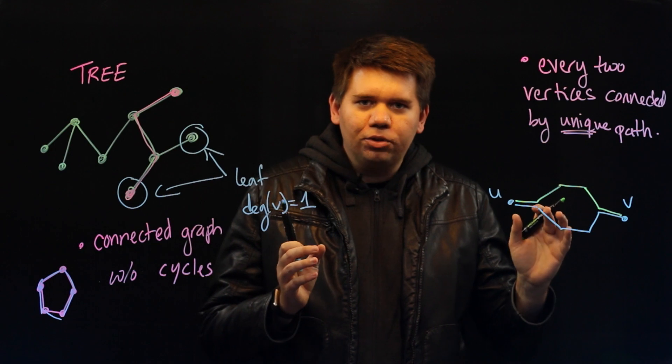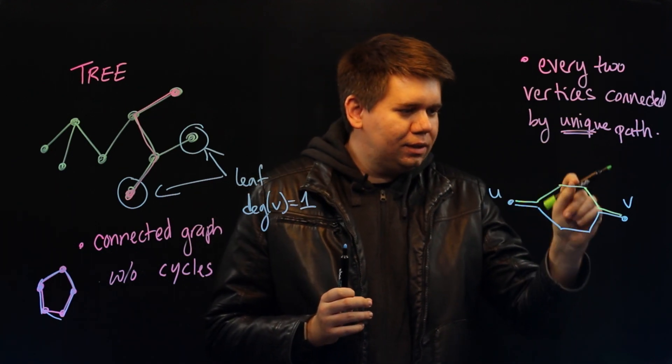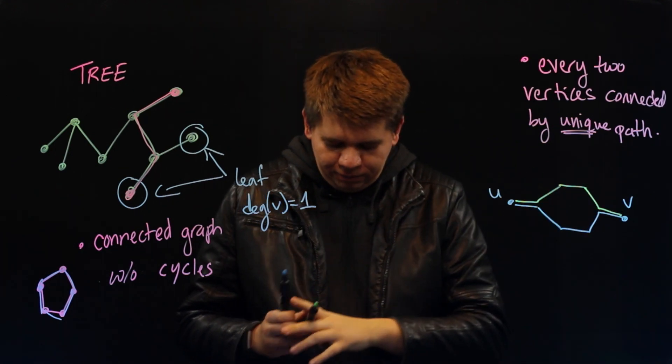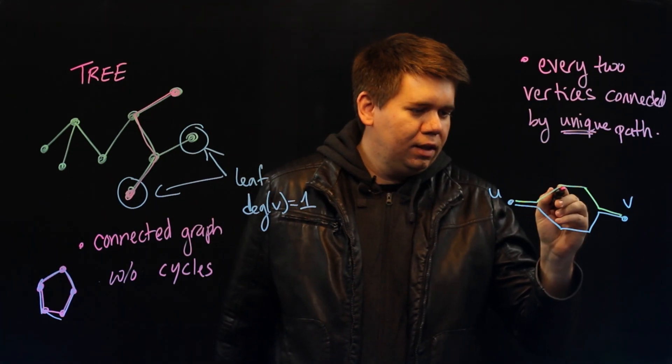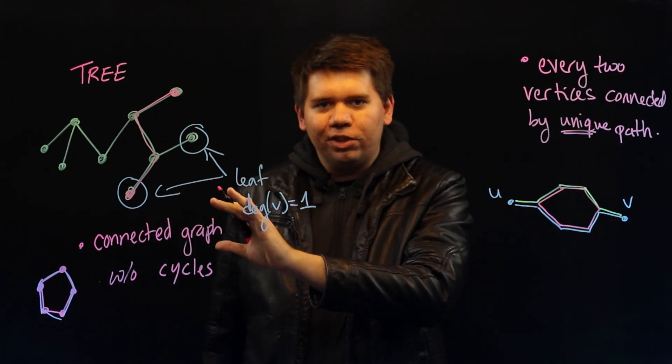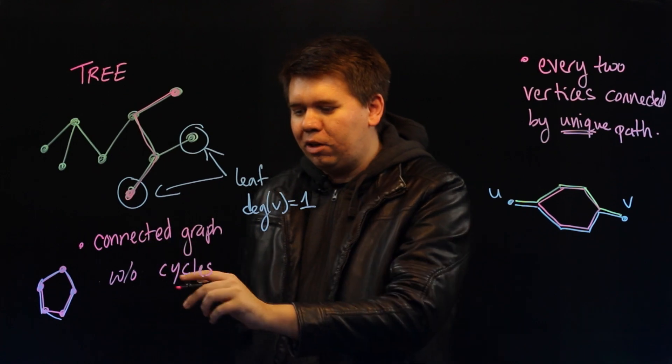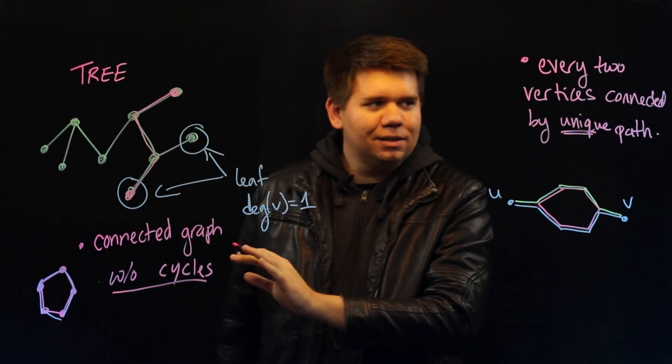Why can't this happen in a tree? Well, if you did have these two distinct paths between u and v, then notice they will form a cycle in your tree. And we defined a tree to be a graph without cycles.